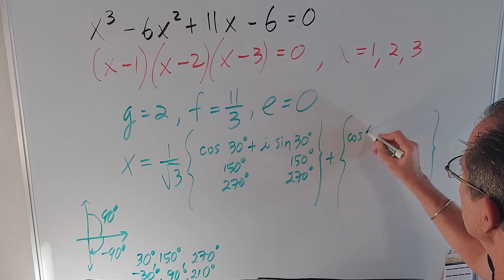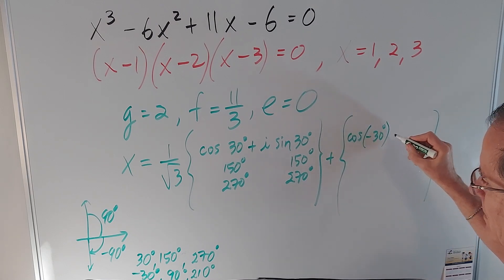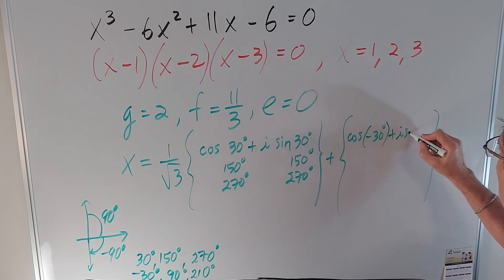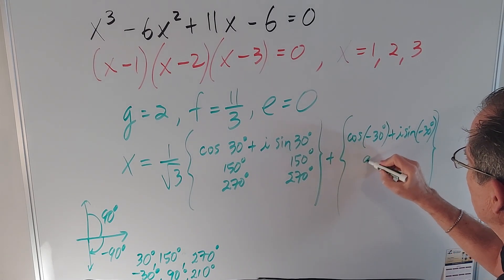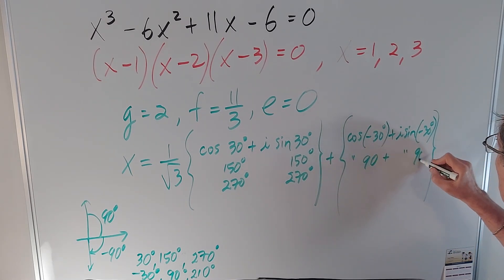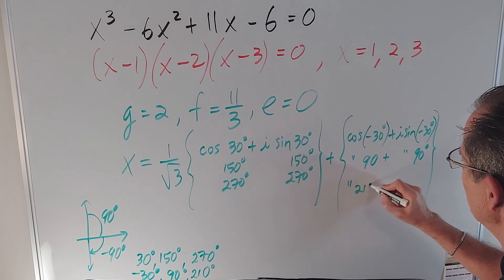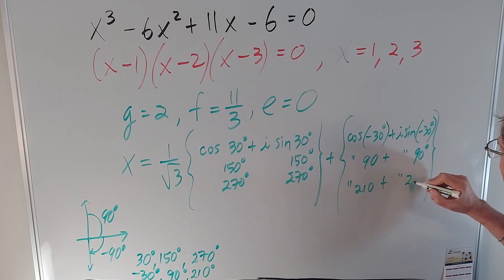Plus three possibilities for this one: cos negative 30 plus i sine negative 30 degrees, and then we're going to have 90 degrees, and 210. Don't forget the plus 2.